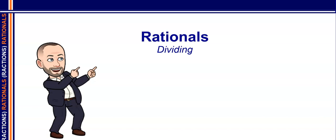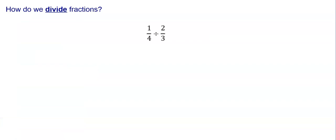Welcome back. We're going to continue our unit on rationals by looking at how to divide rational expressions. But before we get to expressions with variables, let's just look at fractions that have just numbers. If I have one-fourth divided by two-thirds, the way I would go about dividing this is I could rewrite it as one-fourth divided by two-thirds as one big fraction.